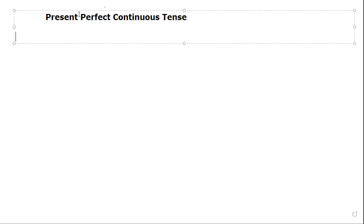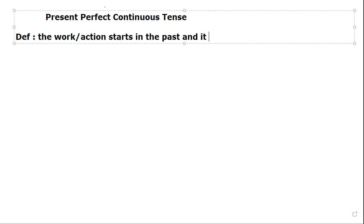Why do we use Present Perfect Continuous Tense? The question arises. We use it when we are talking about work that started in the past and it still continues until the present time. It shows a work or action that starts in the past and continues until the present time. There are lots of works that we start in the past and keep doing for a period of time — then we use Present Perfect Continuous Tense.